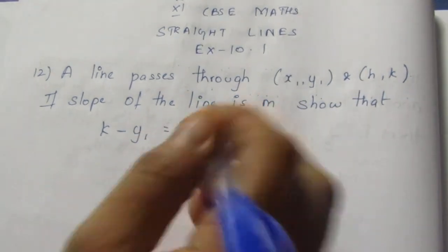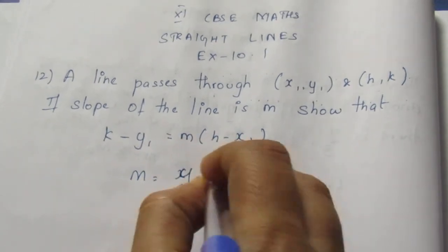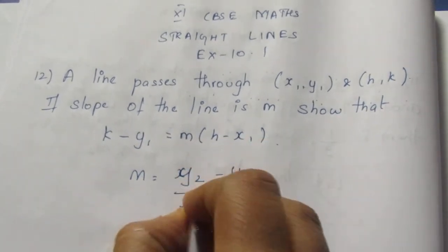Now we know that slope is equal to m. The slope formula is y2 minus y1 by x2 minus x1.